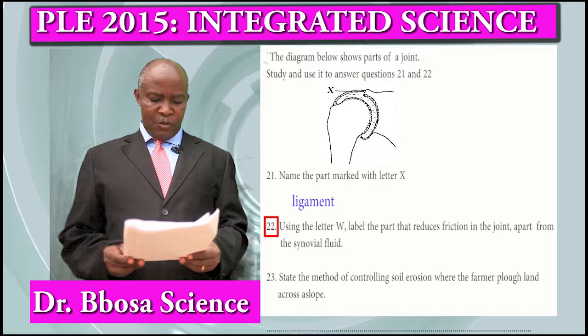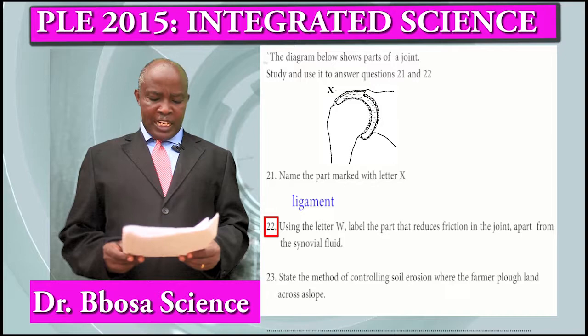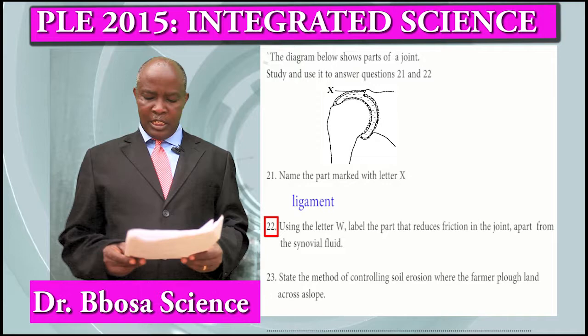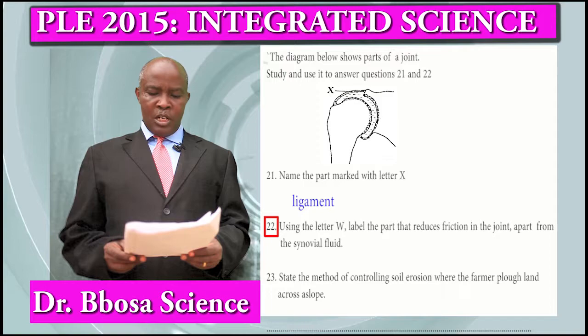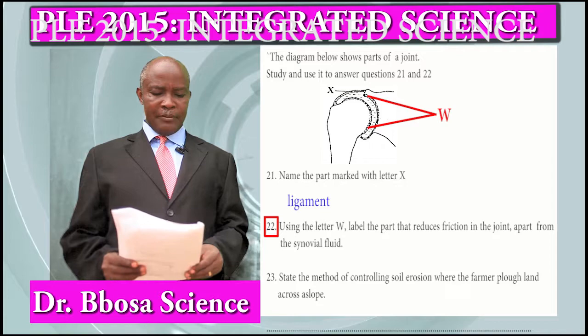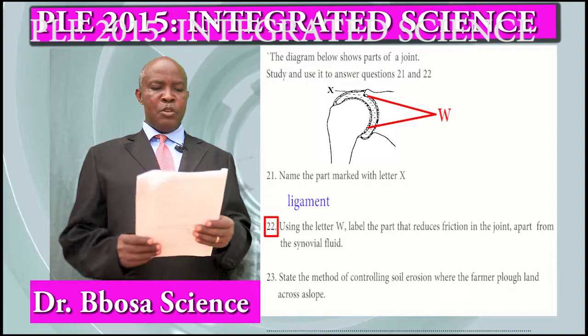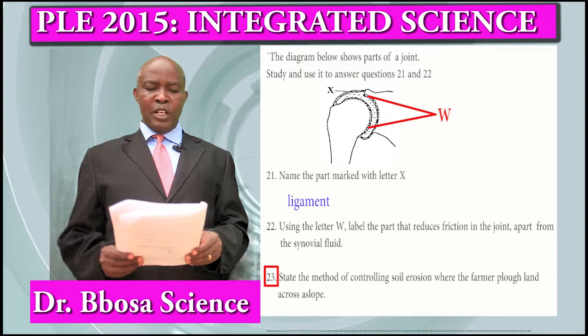Question 22: Using letter W, label the part that reduces friction in the joint apart from synovial fluid. W is put on the cartilage. The cartilage reduces friction between bones.